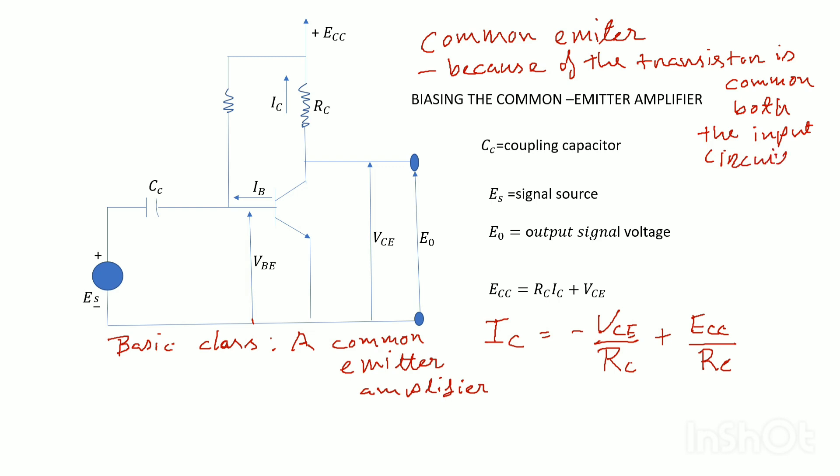We can draw a straight line. It is convenient to superimpose on the collector characteristics of the transistor. The superimposed line is referred to as the load line. If IC equals zero, then Vce equals Ecc, and this is one point needed to plot the load line. The second point is obtained by setting Vce equal to zero.